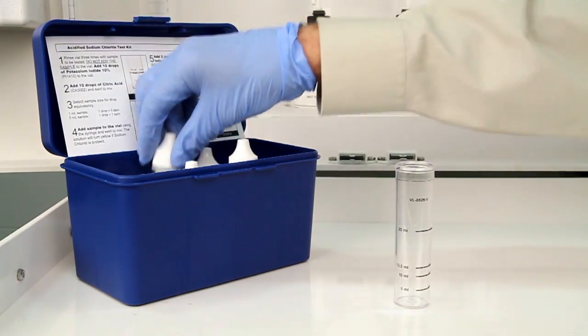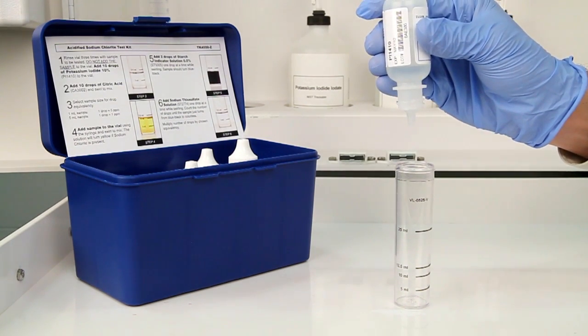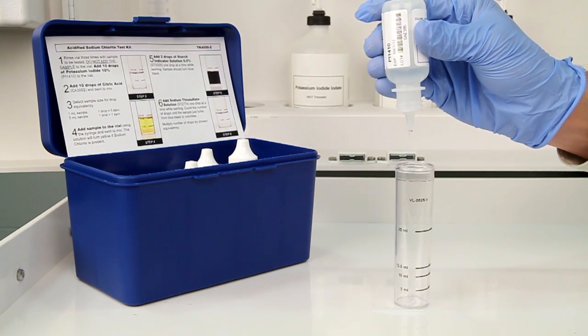Before adding your sample to the vial, add 10 drops of potassium iodide 10%. The bottle contains a dropper tip, so it's important to hold the bottle vertically to get a consistent drop size.